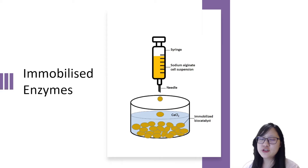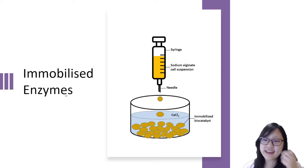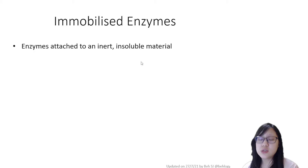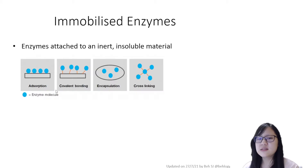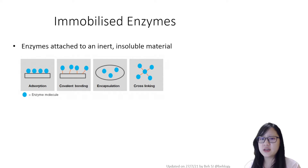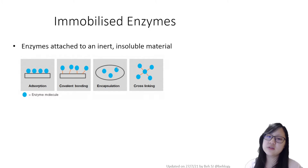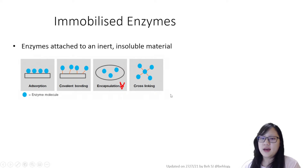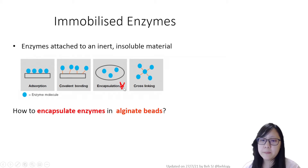Welcome to chapter 3.4 on immobilized enzymes. Immobilized enzymes are attached to an inert, insoluble material. This can happen multiple ways: adsorption, which is directly sticking to a surface; covalent bonding, where the enzyme is bonded to an inert material in the lab; encapsulation into some sort of jelly bead; and cross-linking, where enzymes are linked together so they clump and don't disperse. We primarily focus on the encapsulation method.